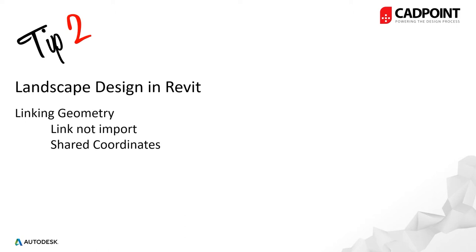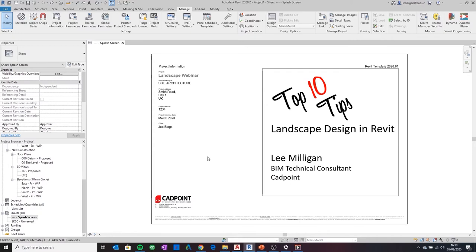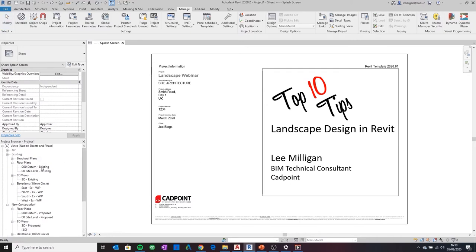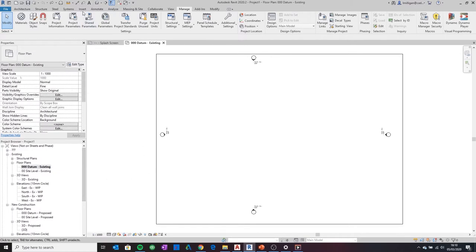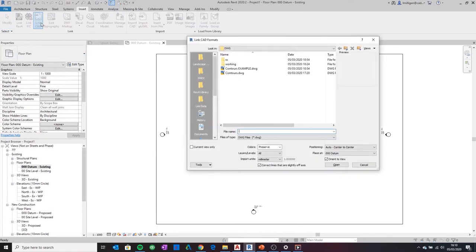Tip two — now we're in Revit. Always, well pretty much always, link DWGs, don't import. This means any changes in AutoCAD will update in Revit like an Xref. Try and set up coordinates as early as possible in Revit. This is done by shared coordinates, specifying coordinates at a point. So now in Revit, we're going to move into our existing datum level, zero zero, and we're going to link CAD — not import it — so any changes in our AutoCAD file will be updated in Revit.